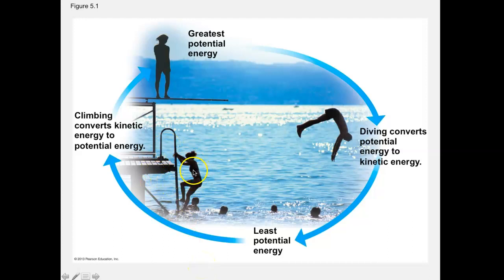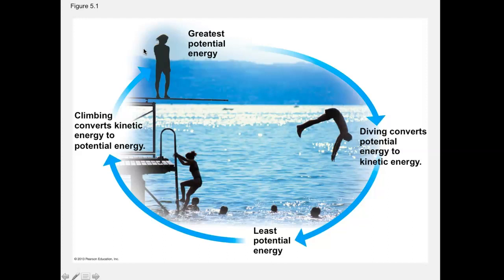This person is climbing up to a diving board. At the bottom in the pool, people have the least potential energy — they may have kinetic energy as they swim, but not much potential energy. As this person climbs up the ladder, they're moving against gravity, converting kinetic energy to potential energy. This person has the greatest potential energy at the top due to their position. If they jump, that potential energy converts to kinetic energy as they dive.